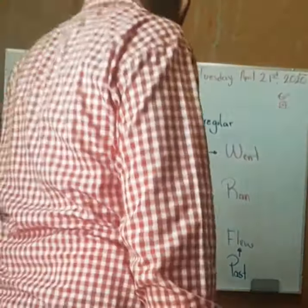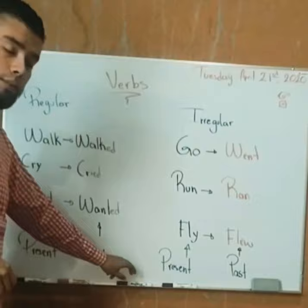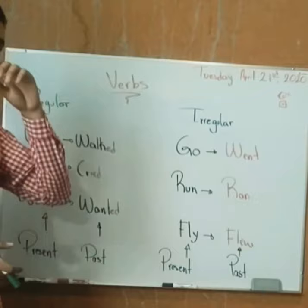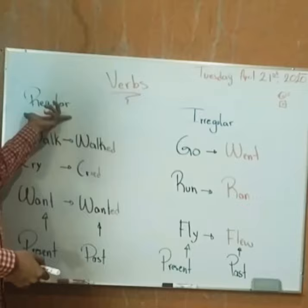Hello everybody, welcome to your second English class. Today we're going to check verbs. In English, we have two different kinds of verbs: we have regular verbs and irregular verbs.